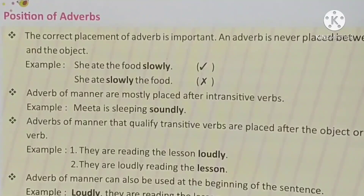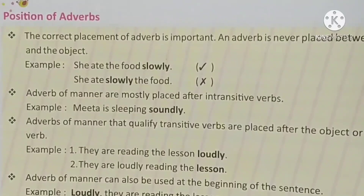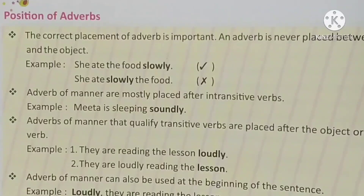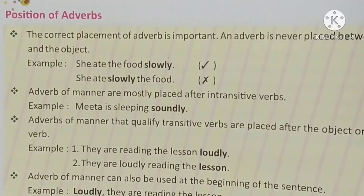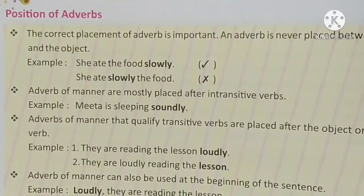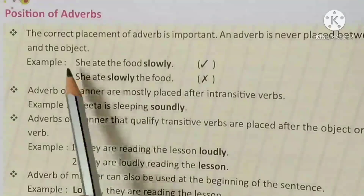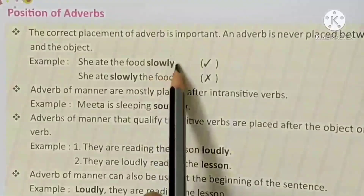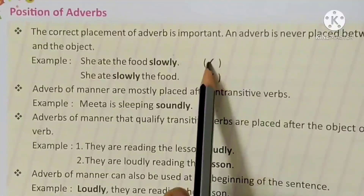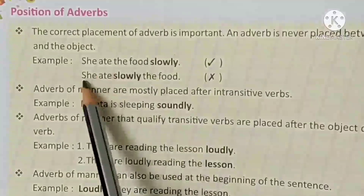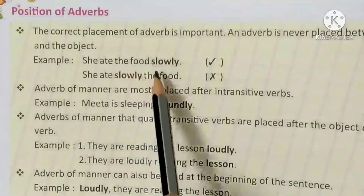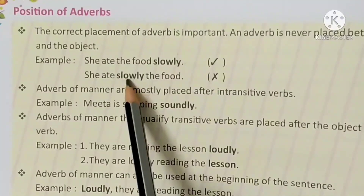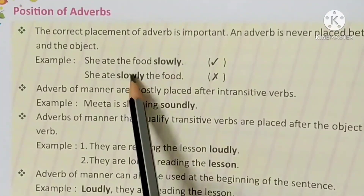Adverb का जो placement होता है वो बहुत जरूरी है कि हमें उसे कहां लगाना चाहिए। एक adverb कभी भी verb और object के बीच में नहीं लगता। Here is an example: 'She ate the food slowly' — this is the correct placement of the adverb. 'She ate slowly the food' is incorrect. Verb और object के बीच में कभी भी adverb नहीं होता।